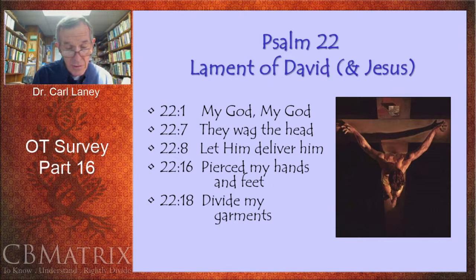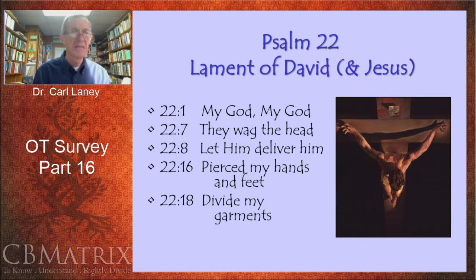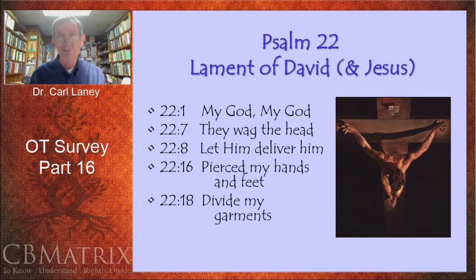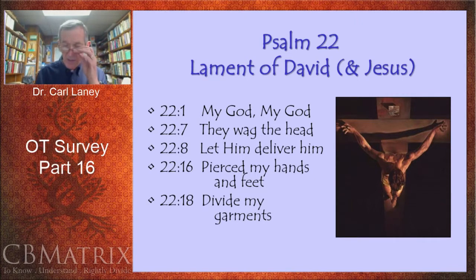He concludes: 'To the people who will be born, they will come and declare his righteousness to a people who will be born, that he has performed it.' He has performed it. What did the Messiah Jesus perform? He performed the work of redemption. I believe Jesus is paraphrasing verse 31 when he declared on the cross, 'It is finished.' The Messiah had performed it — he had finished the work of redemption. Psalm 22 is one of the most well-known messianic Psalms.